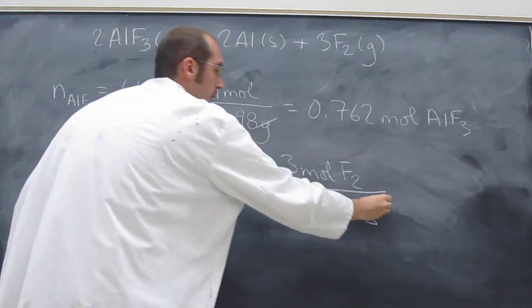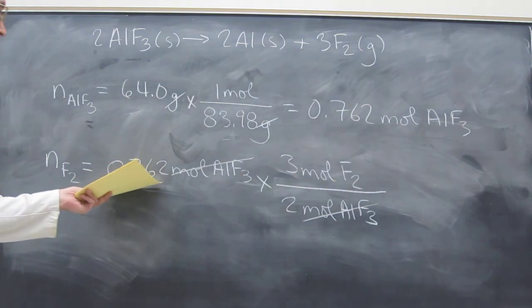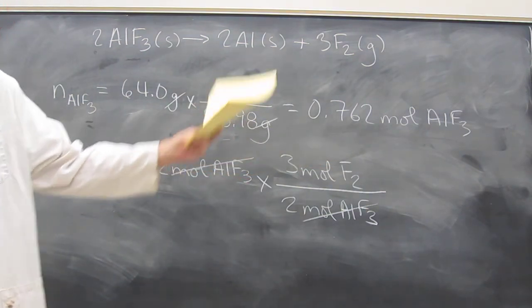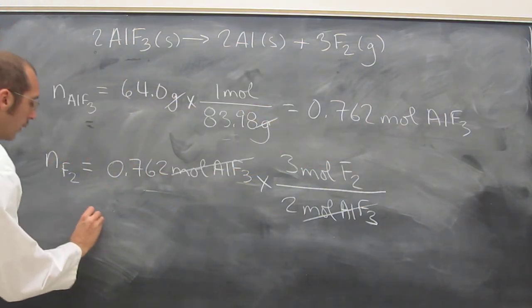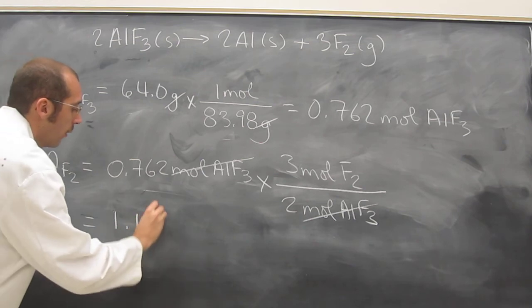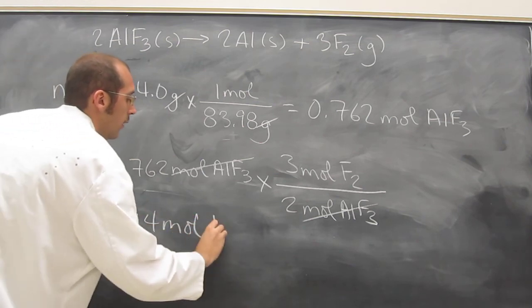Cancel. Cancel. 0.762 times 3 divided by 2 equals 1.14 moles F2.